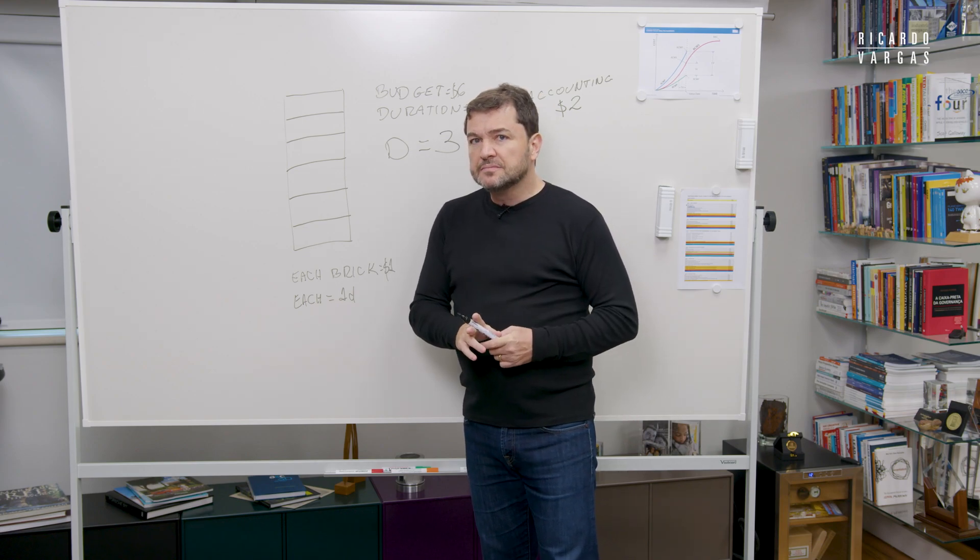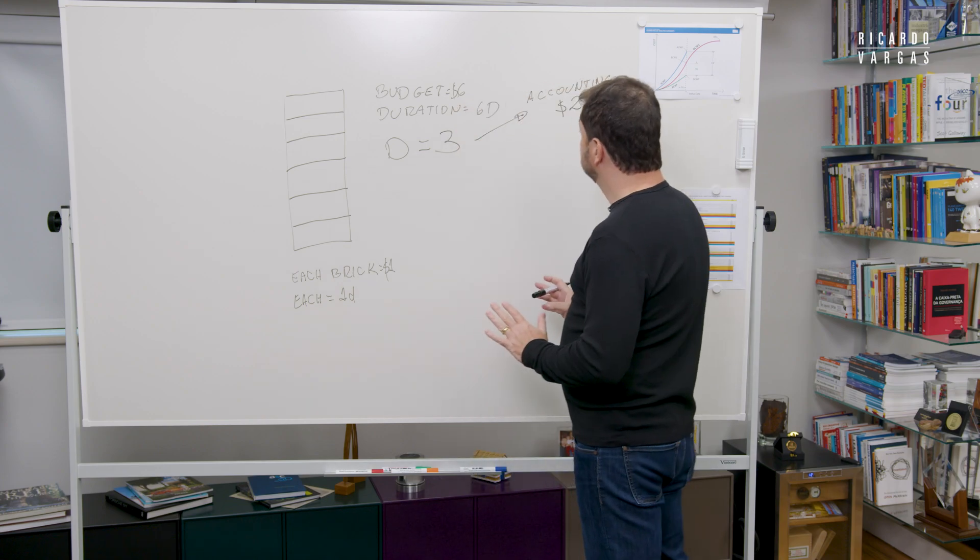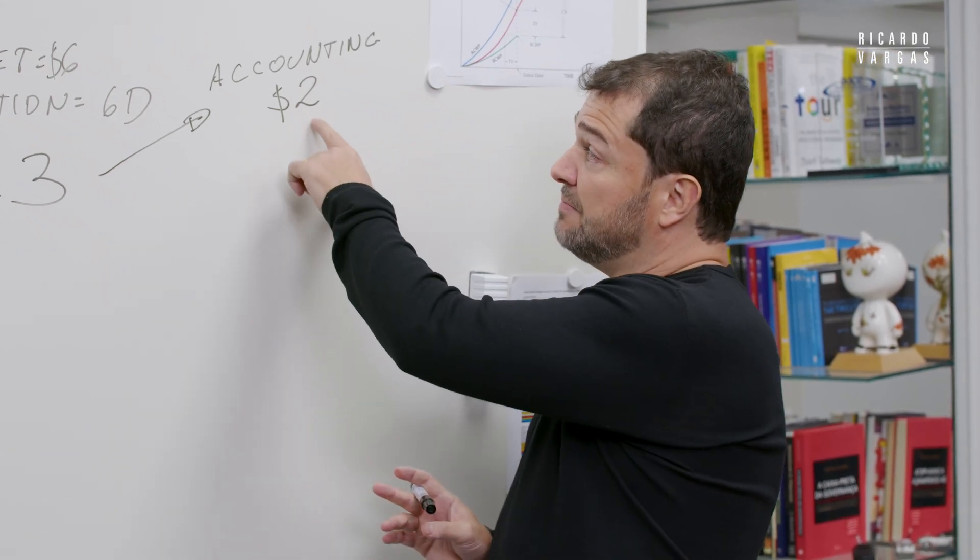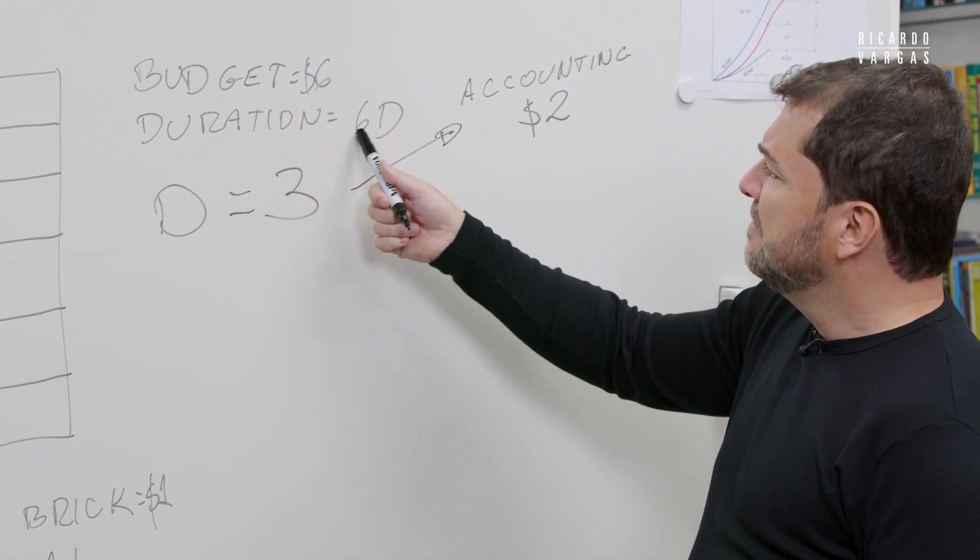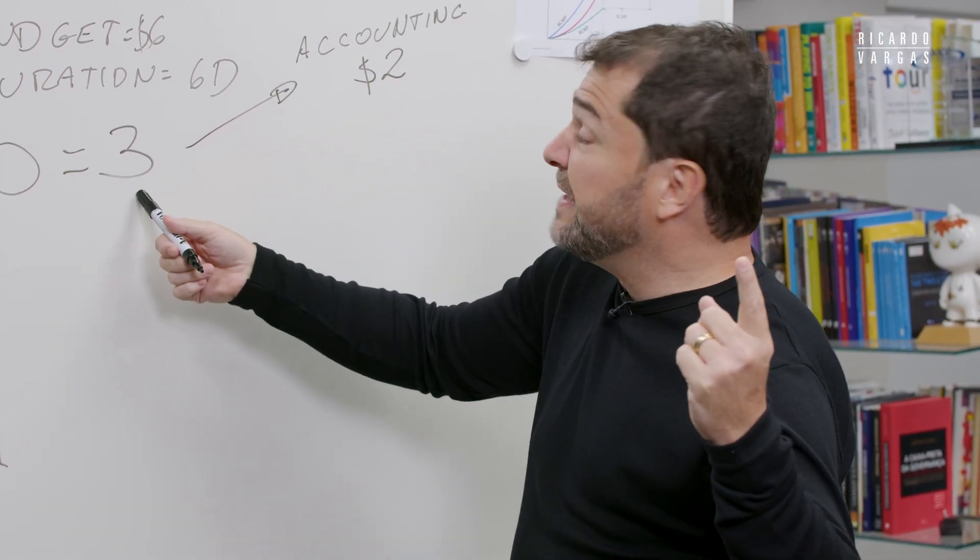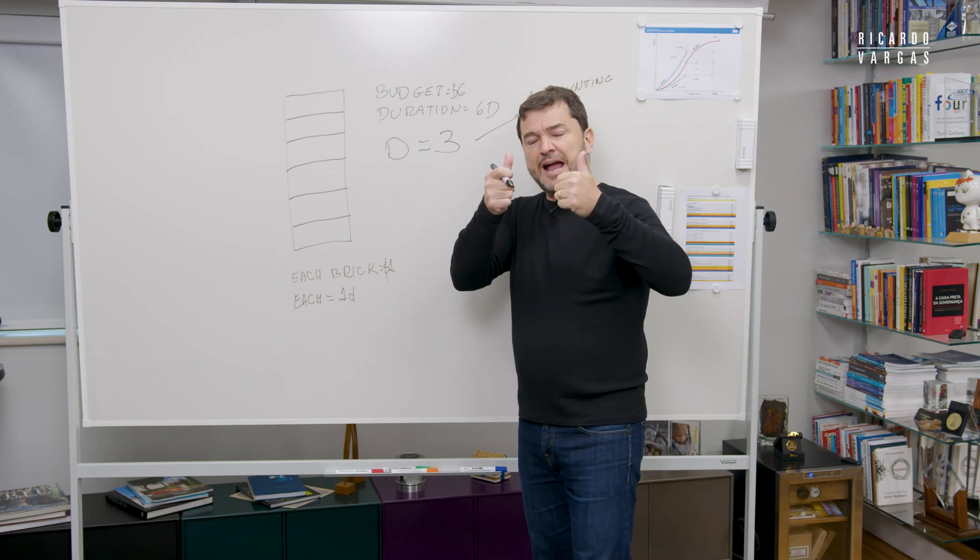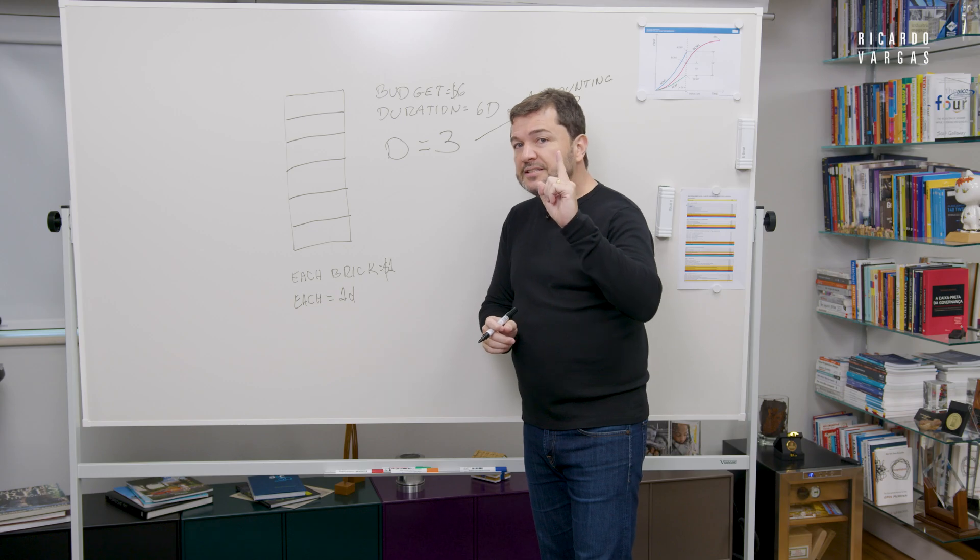Let me stop here. If you stop at this moment and take a look at this, you'll say wow, I'm spending less. Because if it's six days, six means approximately $1 per day. So I was supposed to spend $3, I spent $2. Means I'm in good shape. But this is just a single view.